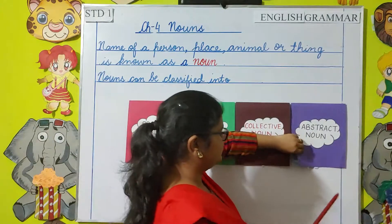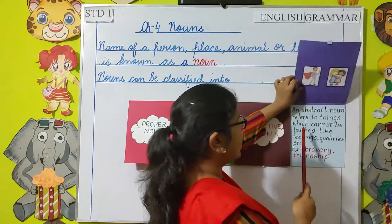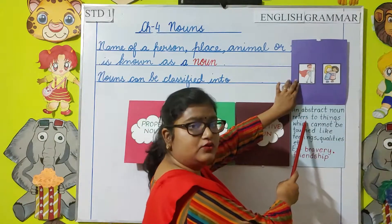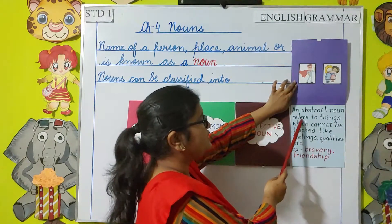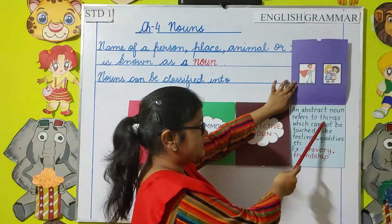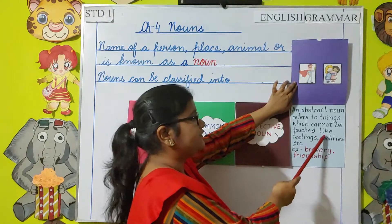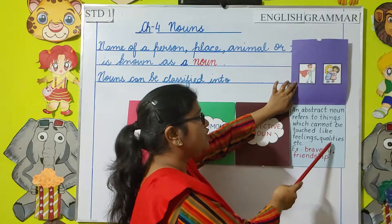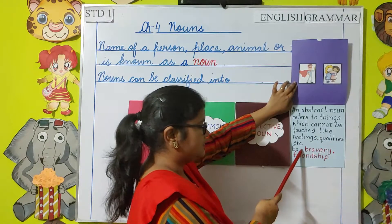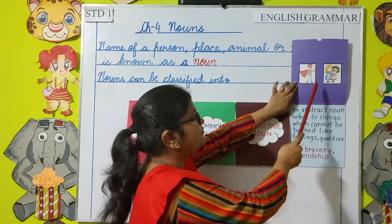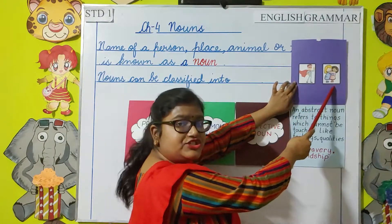Next, abstract noun. An abstract noun refers to things which cannot be touched, like feelings, qualities, etc. For example, bravery, friendship.